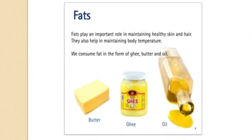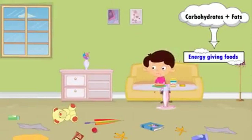Now we will see about fats. Fats are nutrients that keep our body warm and provide us with energy even if we don't eat for a long time. We need carbohydrates in large quantities for sufficient energy, while fats provide more energy than carbohydrates but our body needs fats in a very small quantity. If we eat too much fat, it gets stored in the body and can cause obesity.